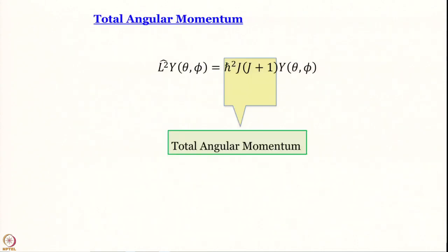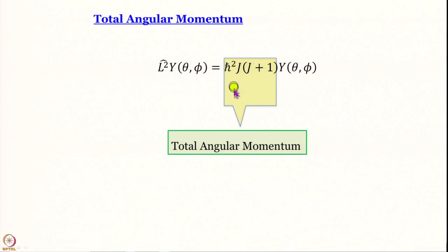To find the energy, we go back to the total angular momentum. We will discuss angular momentum and its components in more detail in the next module. For now, when the square of the angular momentum operator operates on the spherical harmonics, we get back the same wave function multiplied by its eigenvalue: ℏ² × J(J+1). So total angular momentum squared is ℏ² J(J+1).